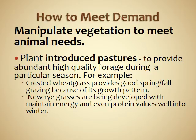Another management strategy is to manipulate vegetation to meet animal needs. One way is to introduce different plants into pastures to provide abundant, high-quality forage during a particular season. For example, many people dislike crested wheatgrass because when mature it's not very digestible; however, crested wheatgrass provides good spring and fall grazing due to its growth pattern and is very nutritional during those times. There's also ongoing engineering and development of new grass types — new ryegrasses are being developed that can maintain energy and even protein values well into winter.